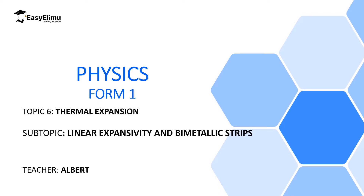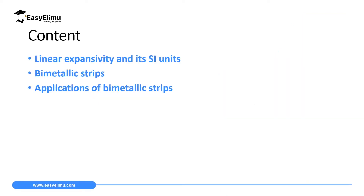By the end of this lesson I expect you to be able to define linear expansivity and state its SI unit, define bimetallic strips and explain how bimetallic strips work, and finally explain the applications of bimetallic strips — especially in the working of an iron box and other devices.